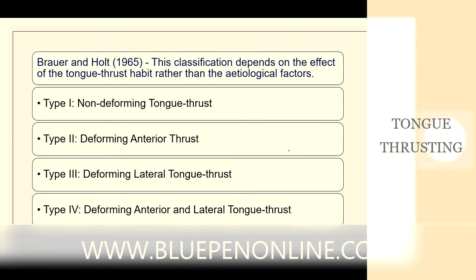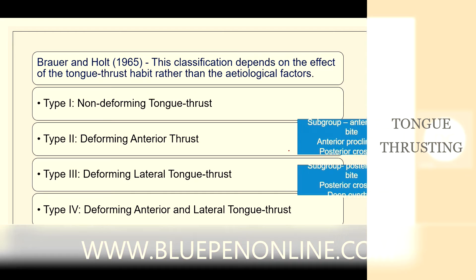Another classification includes: Type 1 - non-deforming tongue thrust; Type 2 - deforming anterior thrust; Type 3 - deforming lateral tongue thrust; and Type 4 - deforming anterior-lateral tongue thrust. Each type also has subgroups such as anterior open bite, anterior proclination, and posterior crossbite.